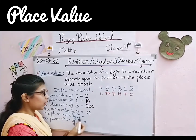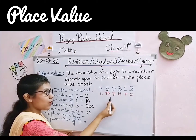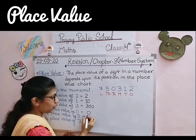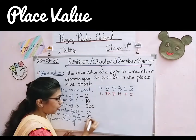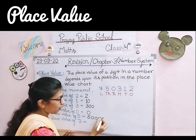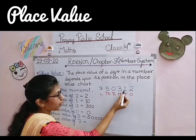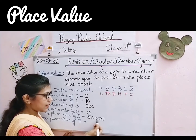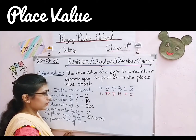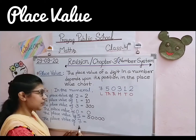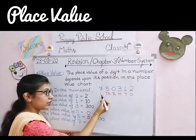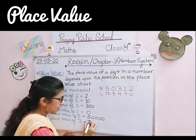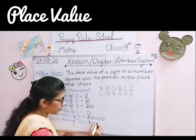The place value of 5 — 5 किस place पे है? 10,000 के place पे। 10,000 में हम 4 zeros put करके लिखते हैं, तो 5 as it is लिखेंगे और इसके बाद 4 zeros लगाएंगे: 50,000। Now the place value of 7 — 7 lakh के place पे है, तो 7 में हम 5 zeros को increase करके लिखेंगे: 7,00,000।